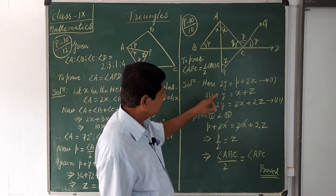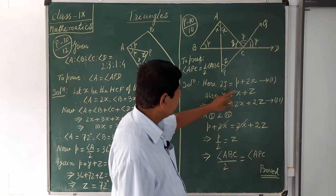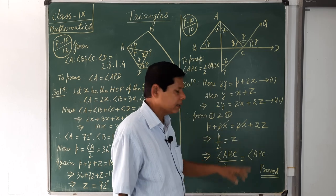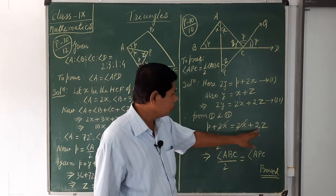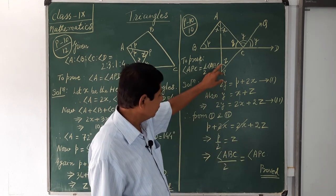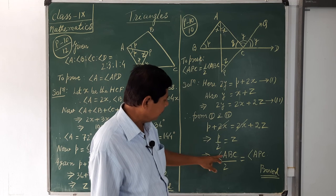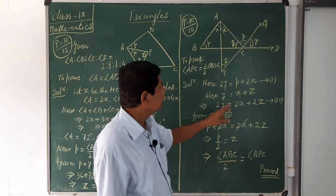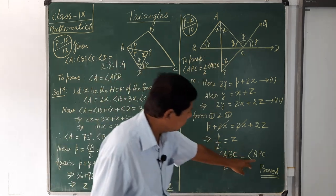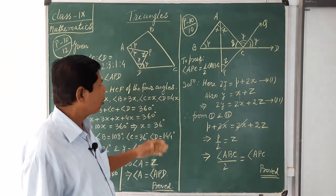From equations 1 and 2, since both left-hand sides equal 2y, the right-hand sides are equal: p + 2x = 2x + 2z. The 2x cancels, giving p = 2z, so p/2 = z. Since p is angle ABC, we write angle ABC/2 = z, and z is angle APC. Therefore, angle APC = ½ angle ABC, which is required to prove. This is problem number 10 — today I have solved 4 questions.